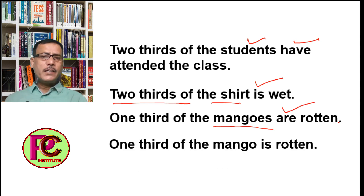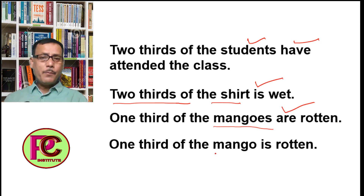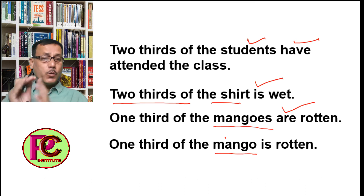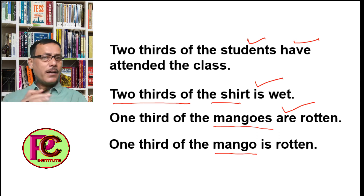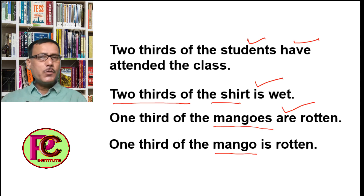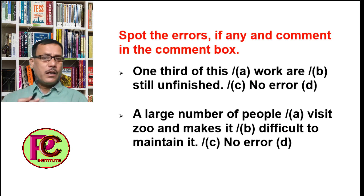'One third of the mango is rotten.' Here 'mango' is singular — there is only one mango, and one third of it is rotten. Since there is only one mango, the subject is singular, so the verb is also singular.